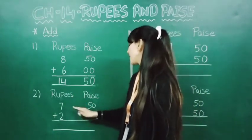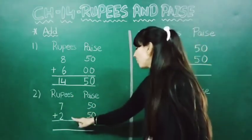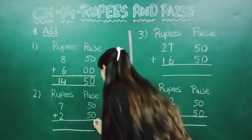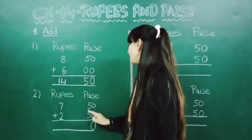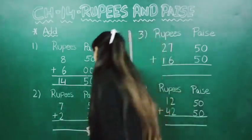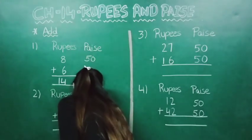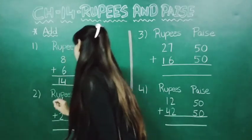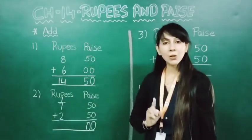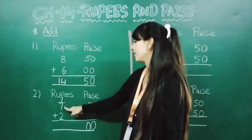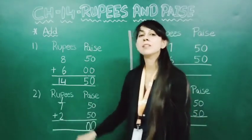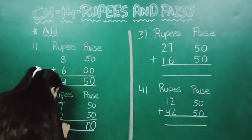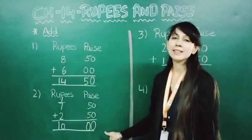Now 7 rupees 50 paise plus 2 rupees 50 paise. Here it will come 0 only. Now 5 plus 5 is 10, so here we will put 0 and carry 1 into the rupees line. Now 1 plus 7 is 8, and 8 plus 2 is 10. So here you can find out the answer is 10 rupees.